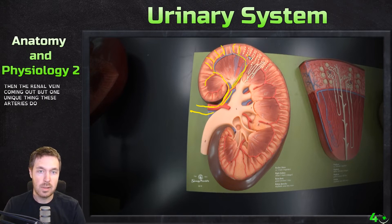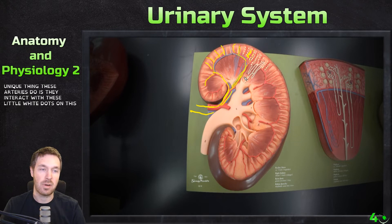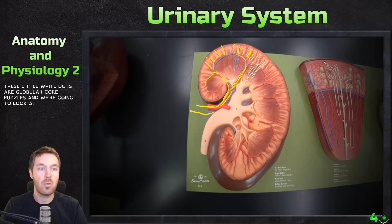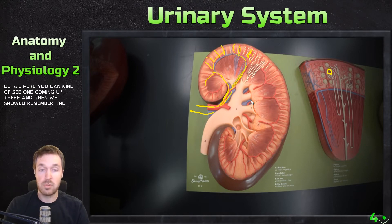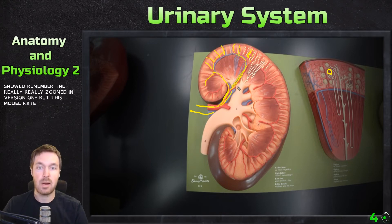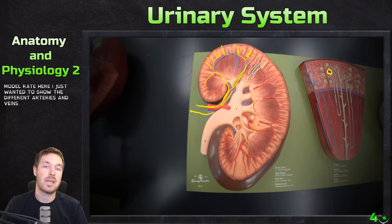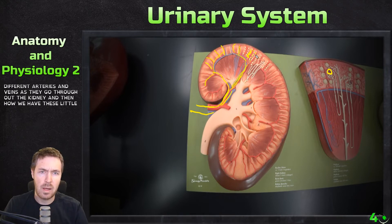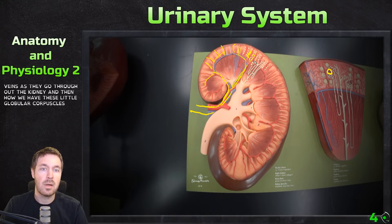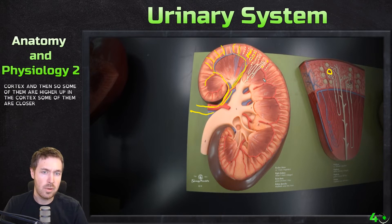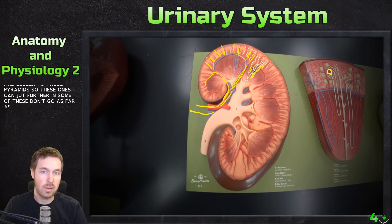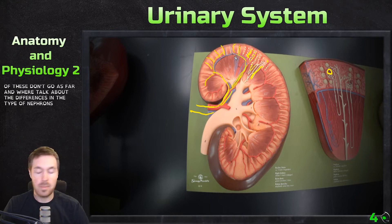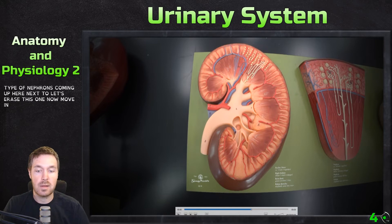For venous return, the same names apply with 'vein' substituted: cortical radiate vein → arcuate vein → interlobar vein → segmental vein → renal vein. One unique feature is that these arteries interact with the glomerular corpuscles — the small white dots visible on this kidney model. These glomerular corpuscles are located in the cortex, with some higher up and some closer to the pyramids, corresponding to different types of nephrons.